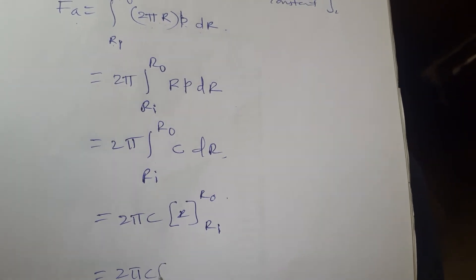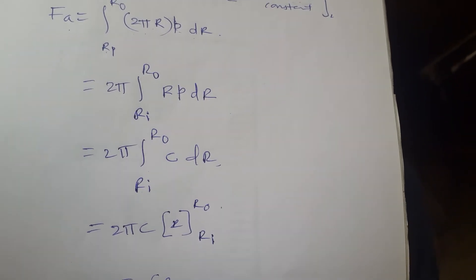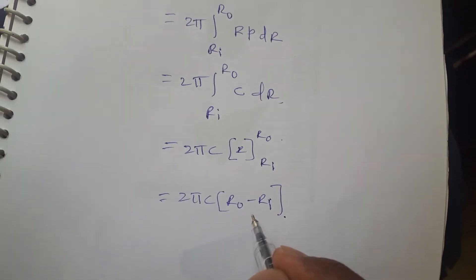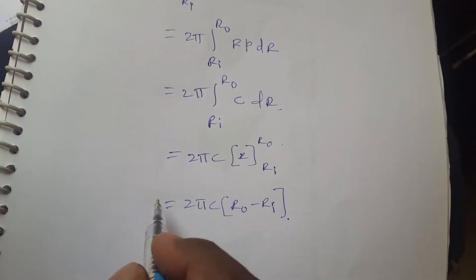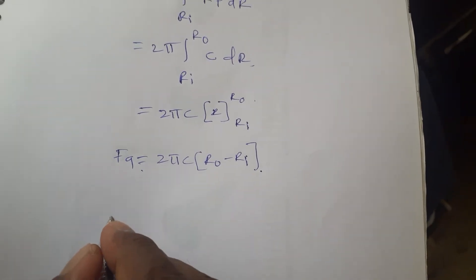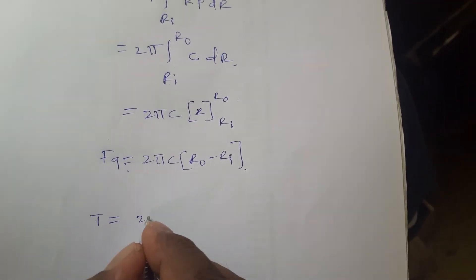Now this is what? 2 pi C, R out minus Ri. Sorry. 2 pi C, R out minus Ri is what your FA.